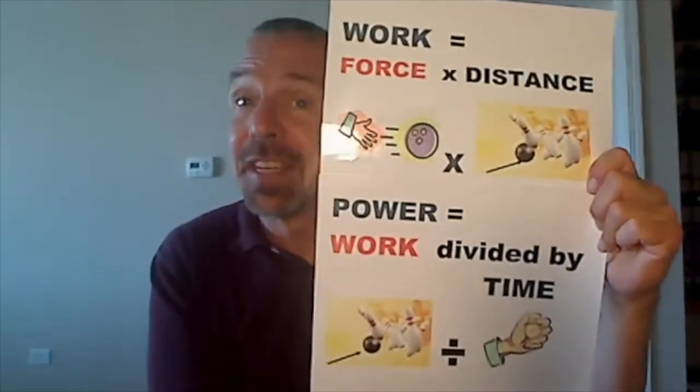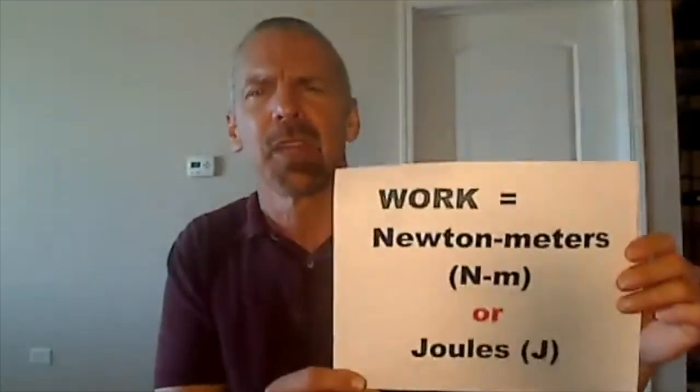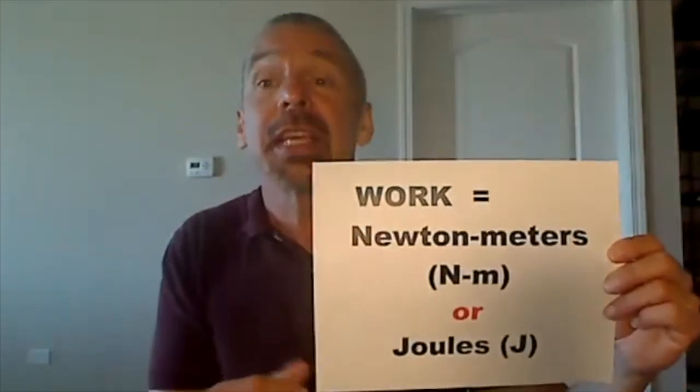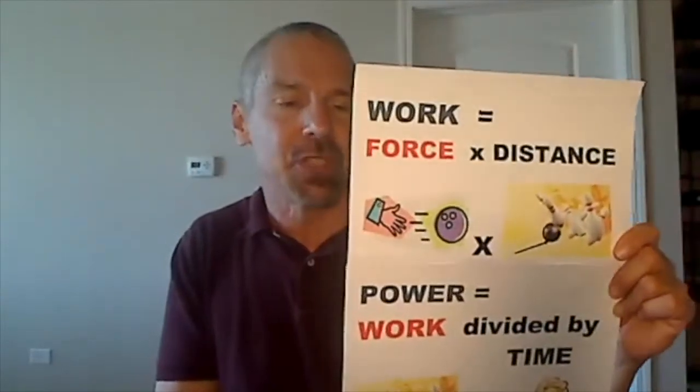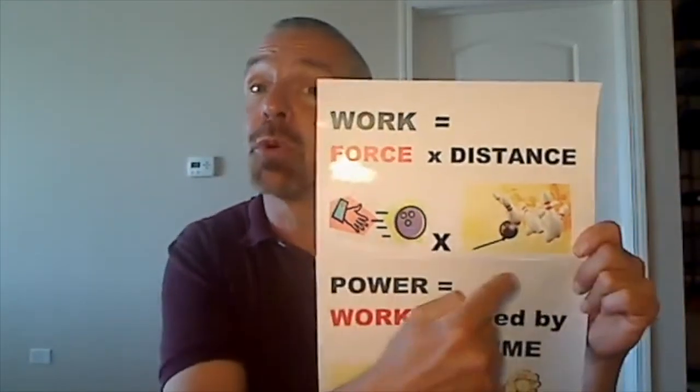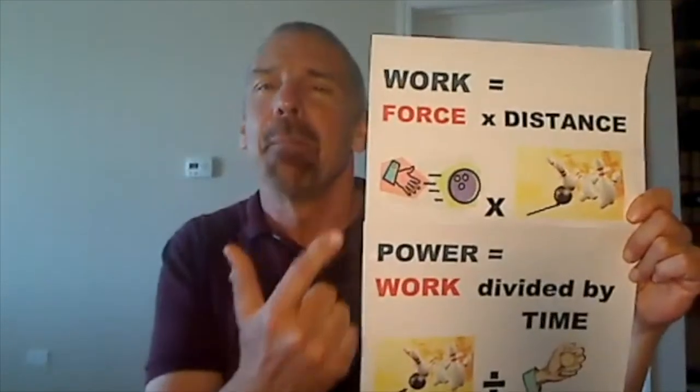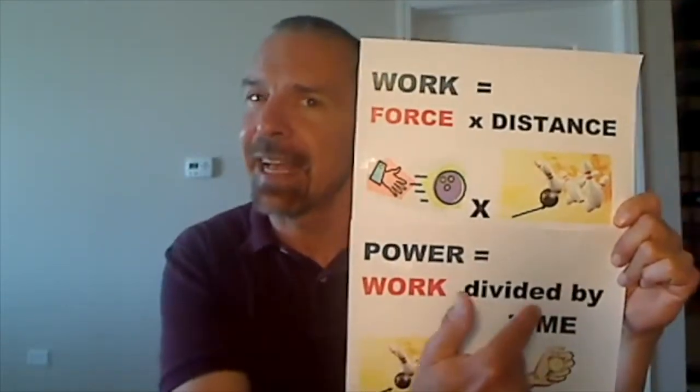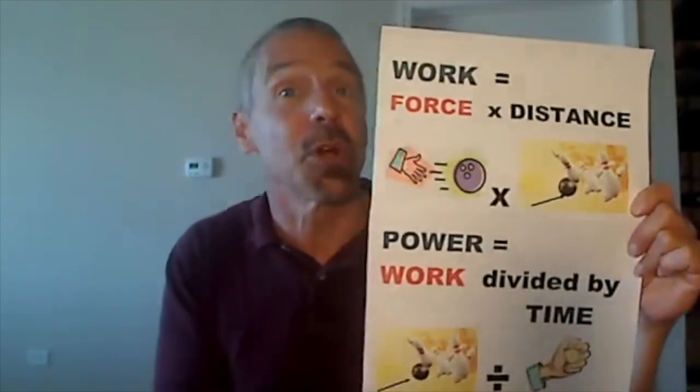The units for work and power are easy to remember, too. Work is expressed in newton meters or joules, power watts or joules per second. Power watts or joules per second. Singing work is done on an object when a force moves that object through a distance. Power is found dividing work by the time, the time it takes for work to be done.